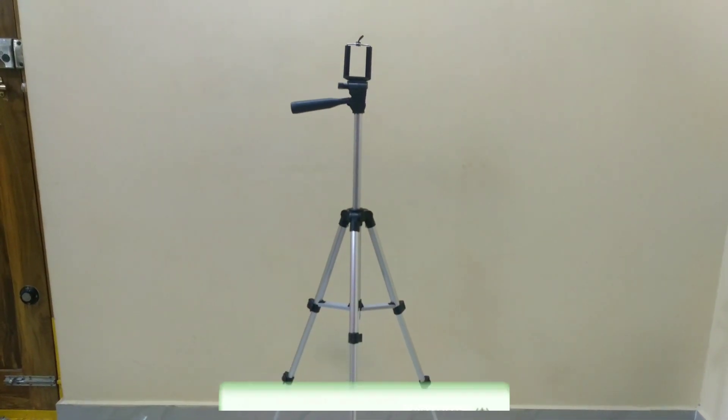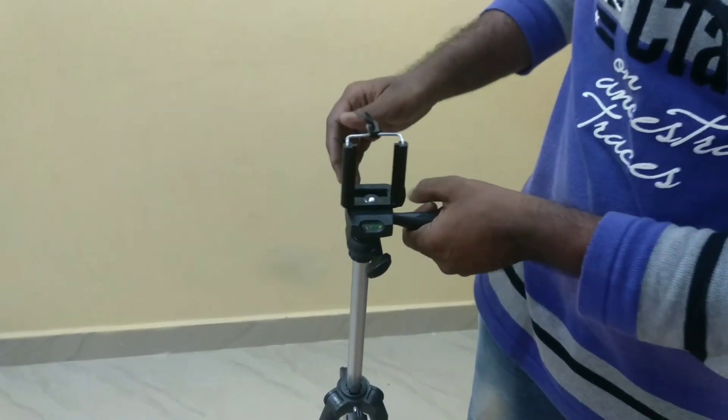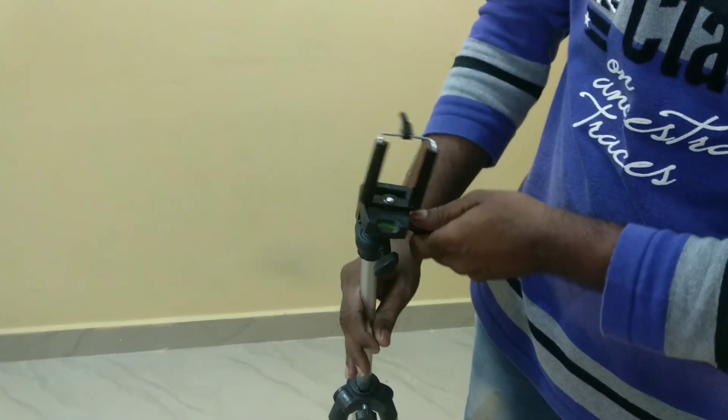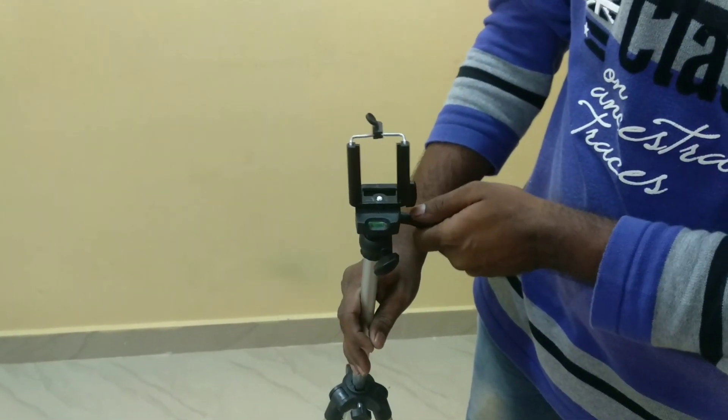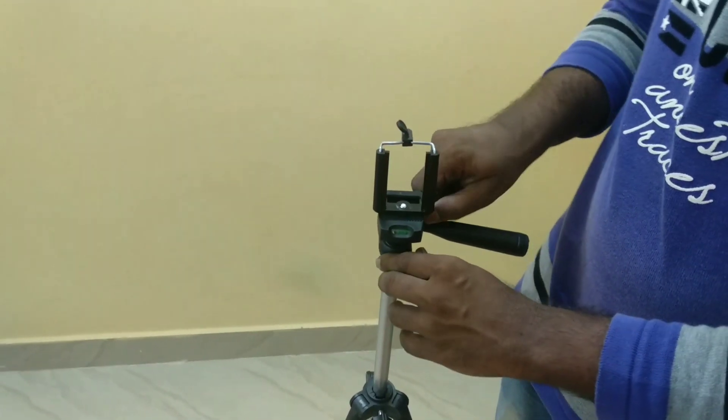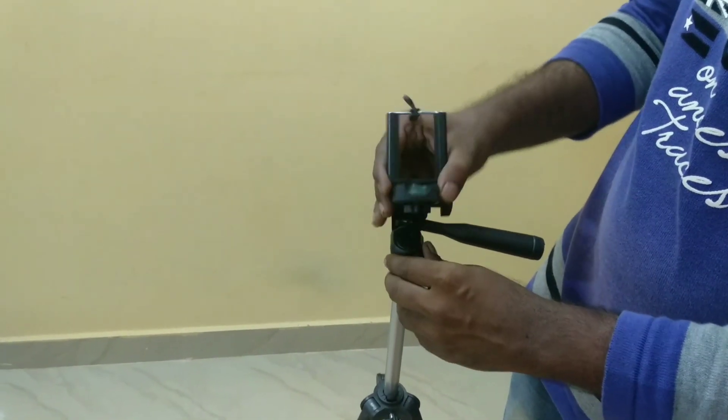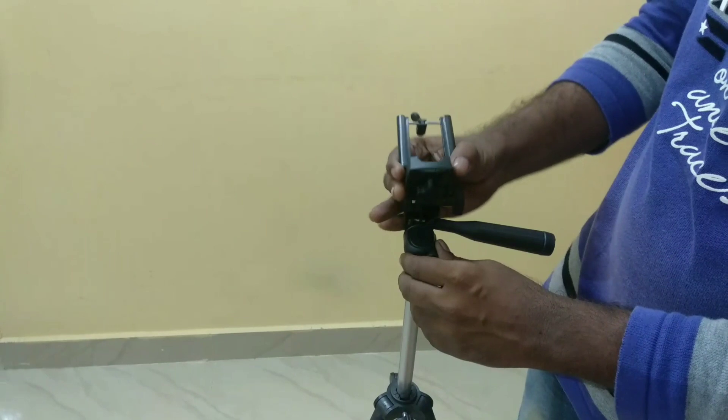We have the auto level feature, and also we have a side handle. You need to use this side handle. There are two knobs. If you open this knob, you can provide a tilt to the holder.